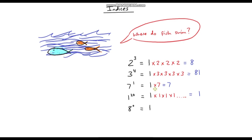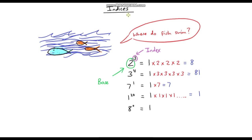Just to recap: whenever we've got indices, our big number is called our base — this is what we're going to multiply 1 by. And our small number is called our index — this is how many times we're going to multiply our base by. Where does the name 'indices' come from? It's just the plural of index, so indices means more than one index.